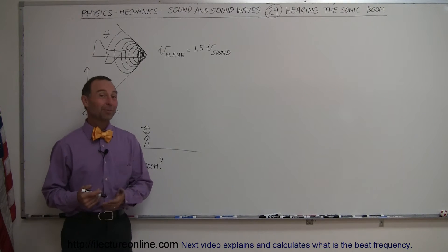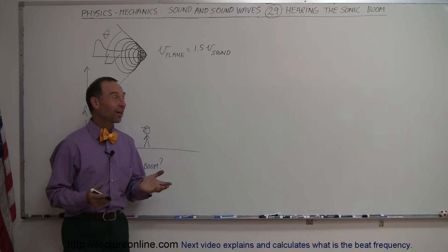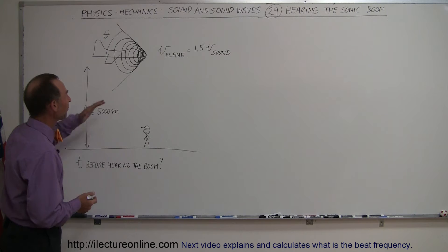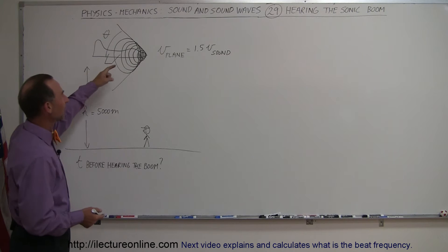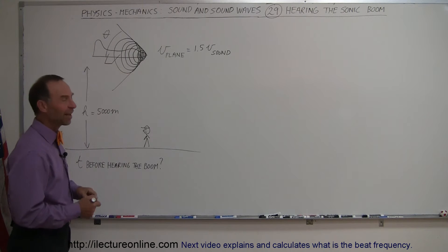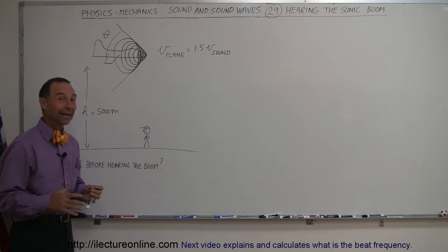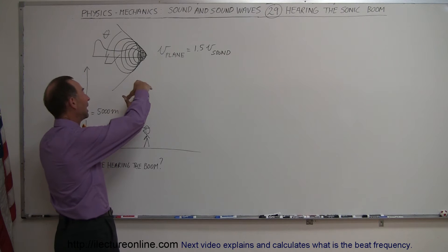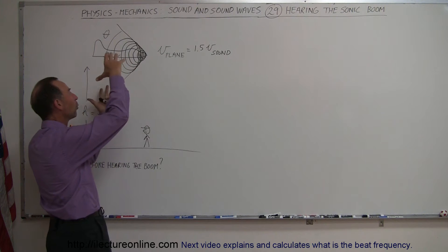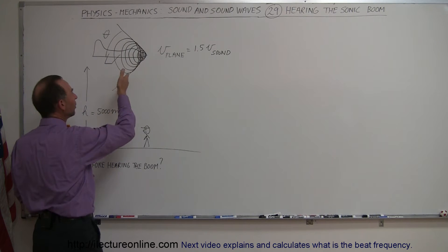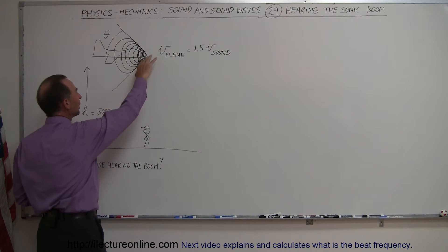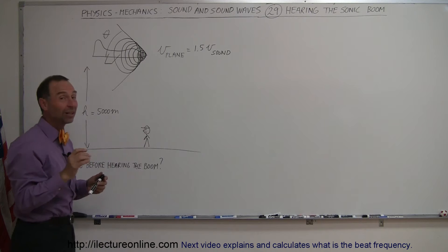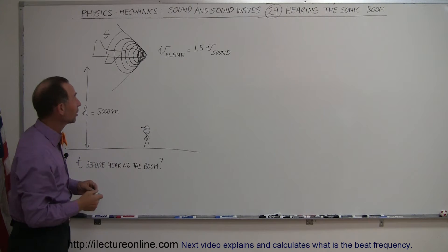Here's another problem dealing with the sonic boom. In this case, we have a plane that's flying at 1.5 times the speed of sound. As we saw in the previous video, that causes a cone-shaped wall of sound, where the sound at the edge of that cone is very, very loud. That's called a sonic boom.